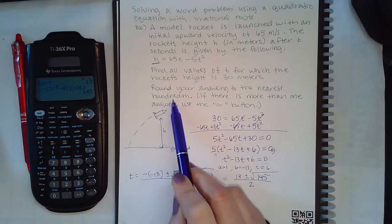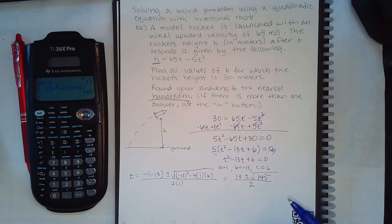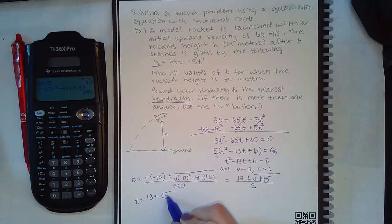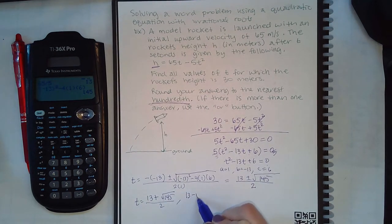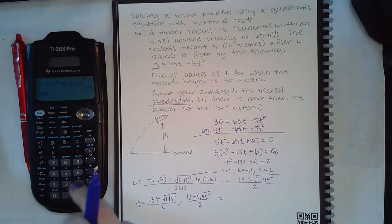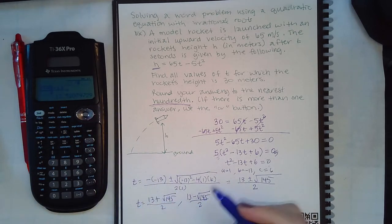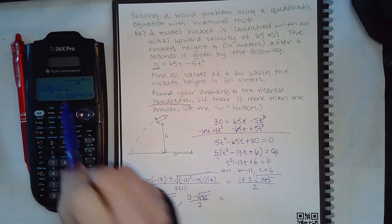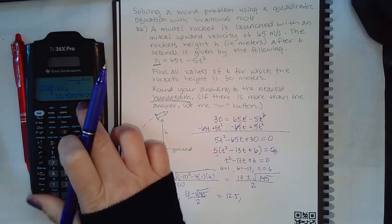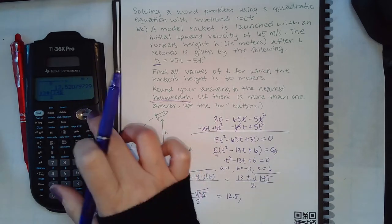So we get positive 13, and inside the square root we get 145. Now it does say round your answers to the nearest hundredth, so that tells me they want us to give them a decimal answer. So we're going to do both values: 13 plus square root of 145 over 2, and 13 minus square root of 145 over 2. So let's see what we get here. Decimal and rounded to the nearest tenth means I'm going to get 12.5 for this response.